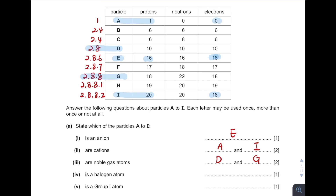Halogen — all halogens are from Group 7. Group 7 means they have seven valence electrons. So which one has seven valence electrons? The answer is F. Group 1 means they have only one valence electron. So the answer is H.